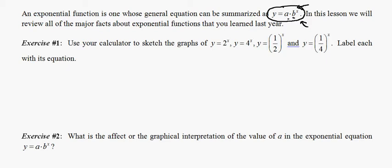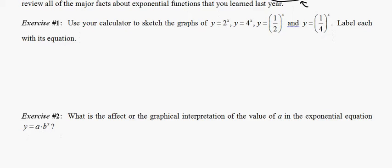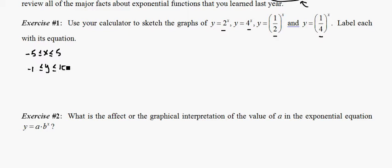In Exercise 1, we see four examples of exponential functions where a, the multiplying coefficient, is 1. We're only looking at the effect of the base: 2, 4, one-half, and one-fourth. The problem says to use your calculator to sketch graphs of these and label each with its equation. Use a window of about negative 5 to 5 for x, and an appropriate y range. Pause the video and sketch those out.